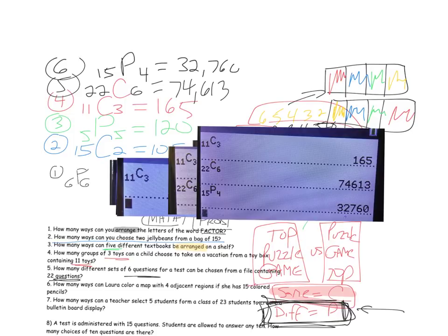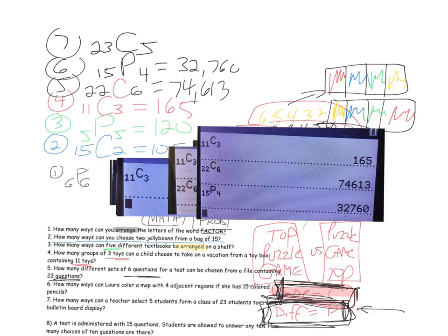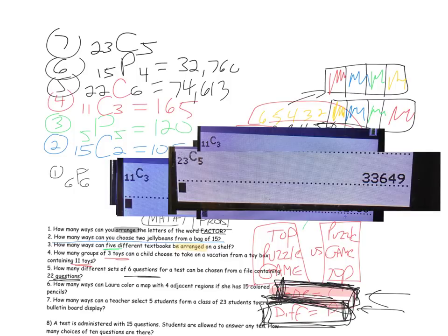Problem seven: how many ways can a teacher select five students from a class of 23 to create a bulletin board display? We have 23 students and choose five. If they choose students one through five, that's the same as choosing students five through one — the same five people are creating the bulletin board. Since switching the order gives the same result, we use combinations: 23C5, or 33,649.